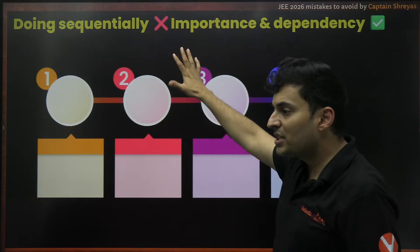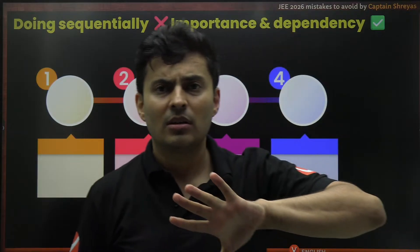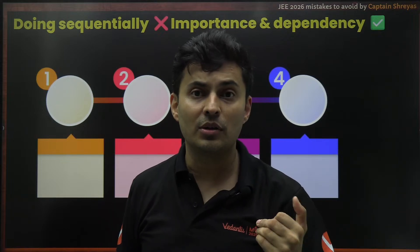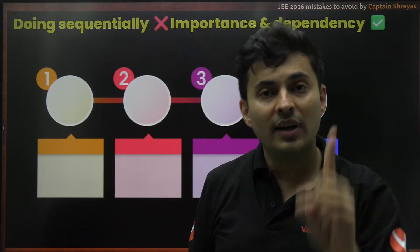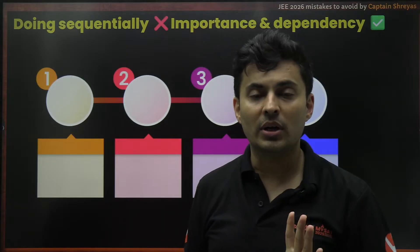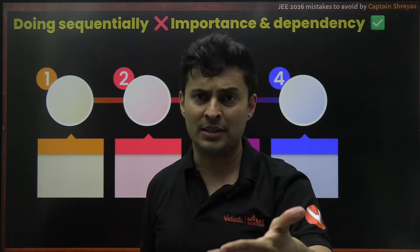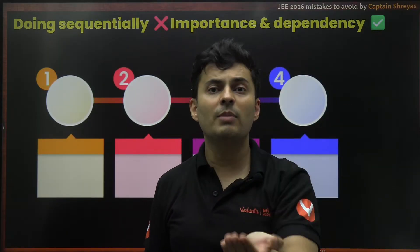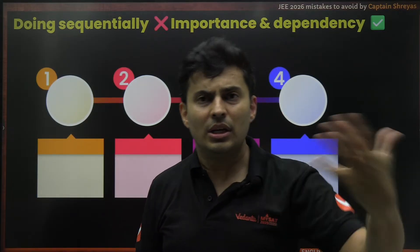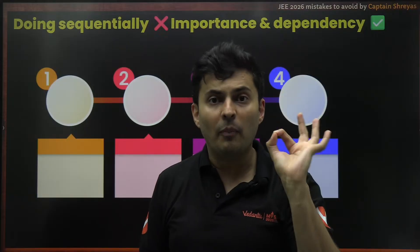The second mistake is many people study chapters sequentially. Maybe you haven't been serious, or you are starting late or have too many backlogs. When you get motivated, you start doing everything sequentially — Units and Dimensions, then this, then this. Don't do that. First start with dependent topics. Dependent means without that topic you cannot study much further, and they are also important. For example, in mechanics: Vectors, Newton's Laws, Work Power Energy — you should know these. Only then can you understand many other things.